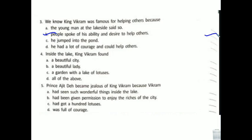King Vikram was famous for helping others because people spoke about his ability and desire to help others. Inside the lake, King Vikram found a beautiful city, a beautiful lady, and a garden with a lake of lotuses — so you can say all of the above. Prince Ajit became jealous of King Vikram because Vikram had been given permission to enjoy the riches of the city.